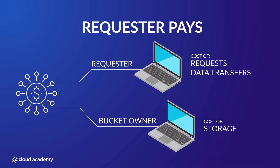A fundamental condition of enabling requester pays is ensuring that all access is authenticated to your bucket, as anonymous access requests will not be able to take advantage of the requester pays attribute. This is because AWS would not know which account to charge the request and data download to. By authenticating requests, it allows a trace back to the identity and to which AWS account that identity is originating from, and the cost is then transferred to that account.